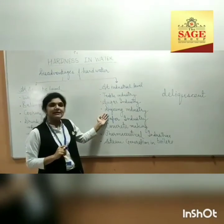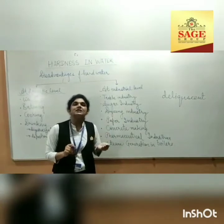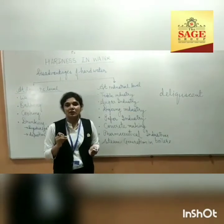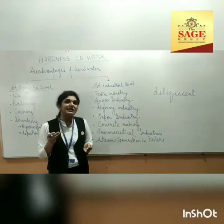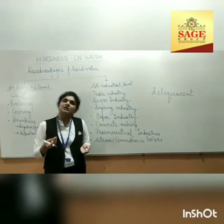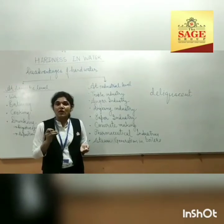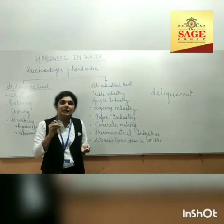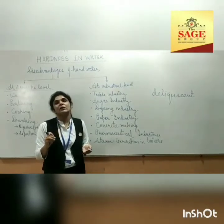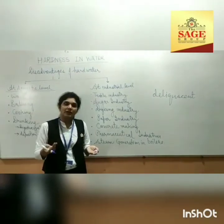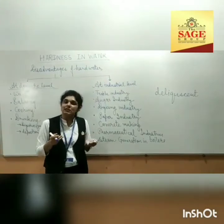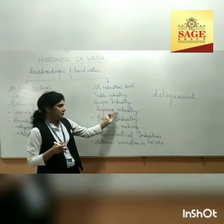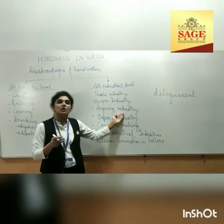Then we come to the dye industry, where clothes are being dyed and colored. Dyes are chemicals used to color the clothes. If hardness is present in water, the hardness reacts with the dye or chemical and leads to some other type of color — the colors are not very sharp. The clothes after production are also not very soft and glossy.